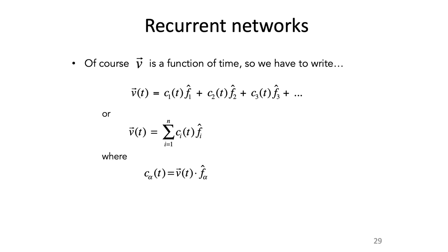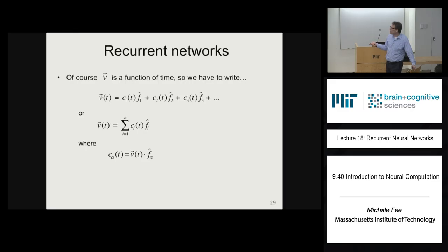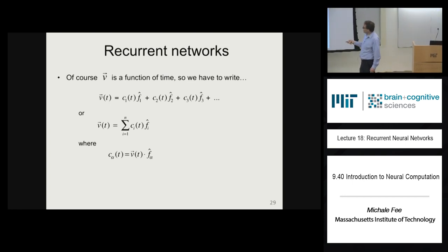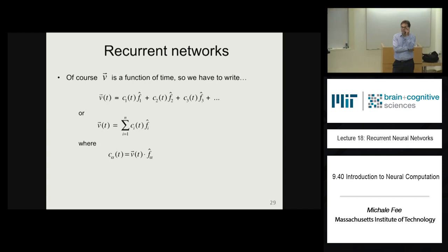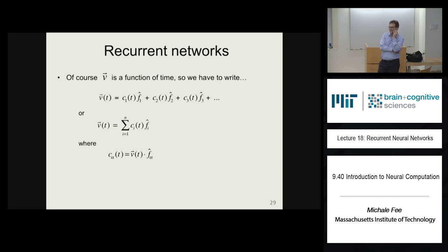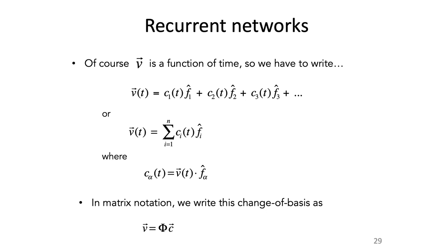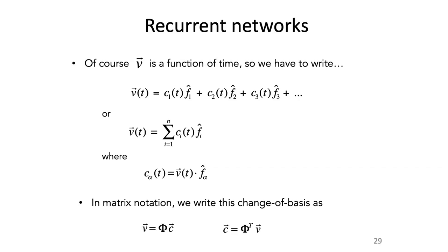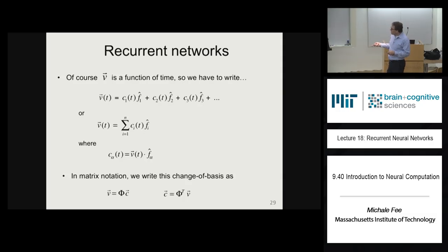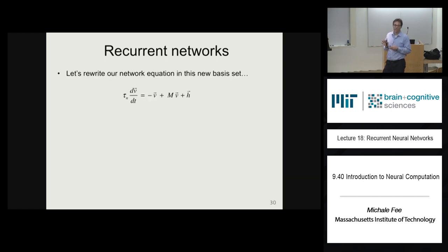We can write v as a sum of contributions in all directions corresponding to the new basis, where each coefficient C is the time-dependent v projected onto one of those basis vectors. In matrix notation from our lecture on basis sets: v is phi C, and C is phi transpose v. We're just taking this vector v, rotating it into a new basis set, and we can rotate it back. Now we'll rewrite our equation in that new basis set.